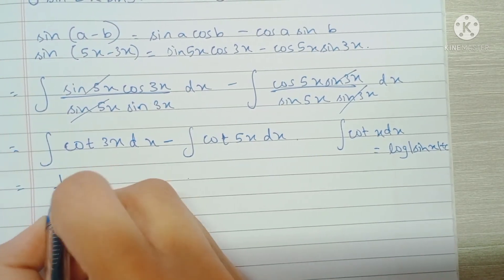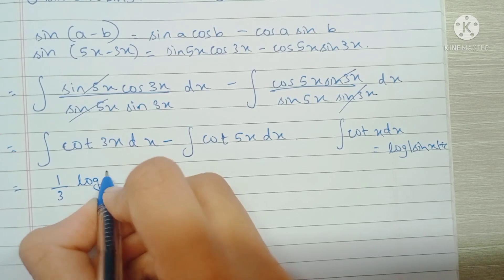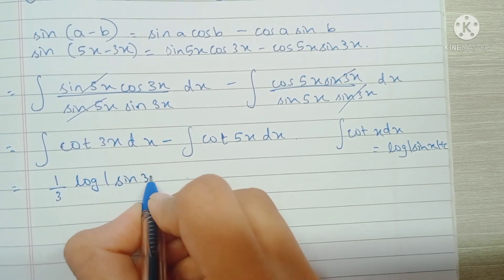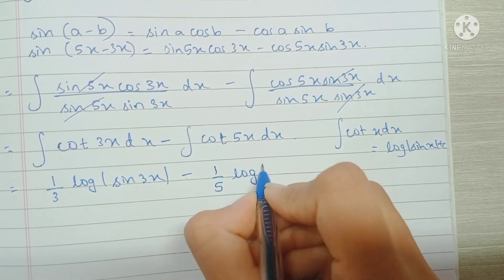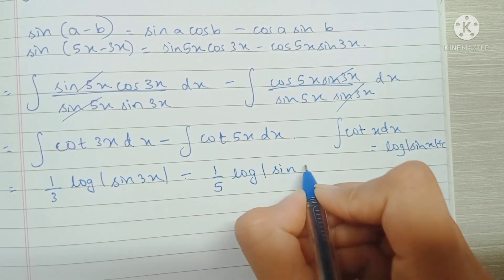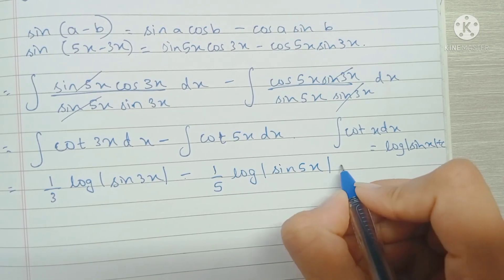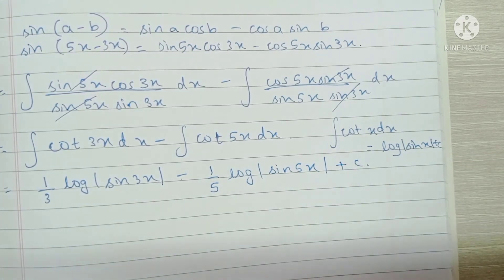So in the first integral we have 1 by 3 log mod of sin 3x, and then we have minus 1 by 5 log mod of sin 5x, then we add a constant and this is our final answer.